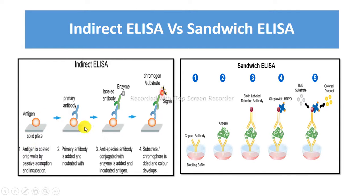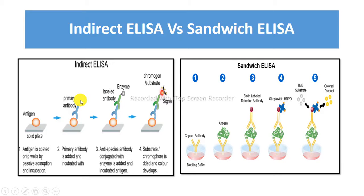Indirect ELISA is a sensitive method, but Sandwich ELISA is 2 to 5 times more sensitive than the Indirect ELISA method. Indirect ELISA involves two binding processes of primary antibody and labelled secondary antibody, and Sandwich ELISA involves the protein of interest which is sandwiched between primary and secondary antibody.